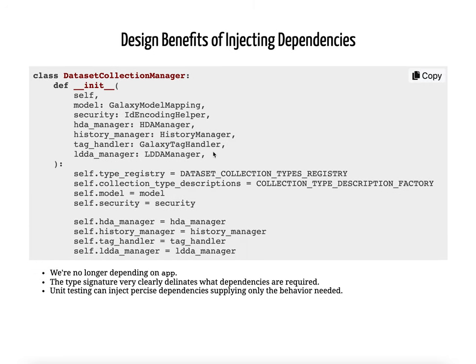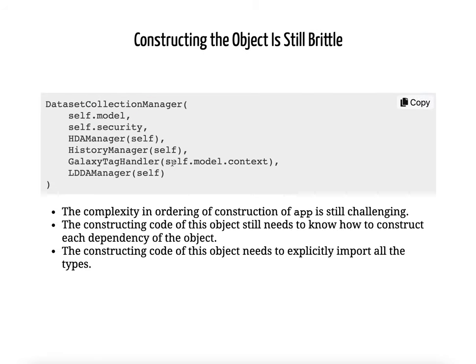Doing dependency injection — where we actually send the dependencies needed for the object during construction — makes unit testing a lot better. And actually, if we look at it now, we're not using app anywhere in here. We've got nice type signatures about what parts of app are needed. This is a much better way to design the dataset collection manager. In fact, we did make this change, and we're in the process of making this change to other components.